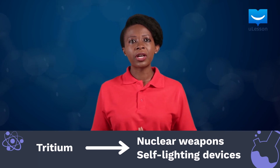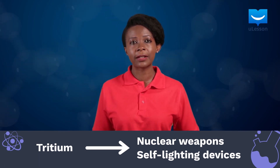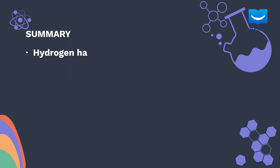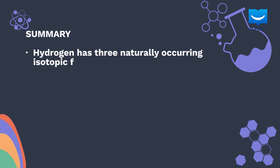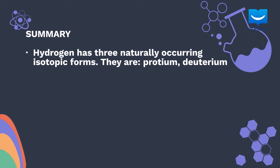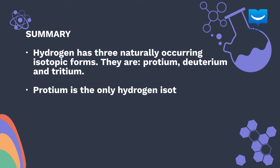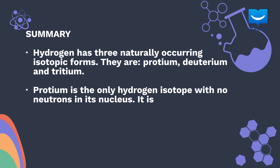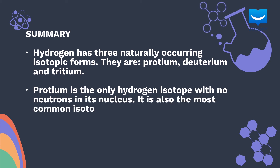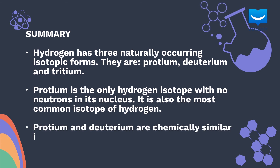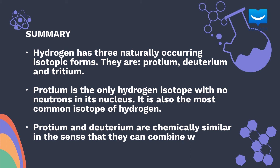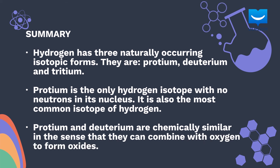In summary, hydrogen has three naturally occurring isotopic forms: protium, deuterium, and tritium. Protium is the only hydrogen isotope with no neutrons in its nucleus and is also the most common isotope of hydrogen. Protium and deuterium are chemically similar in that they can both combine with oxygen to form oxides. I hope you enjoyed this fascinating lesson on the isotopes of hydrogen. I'll see you in the next one.